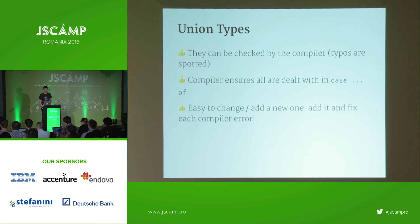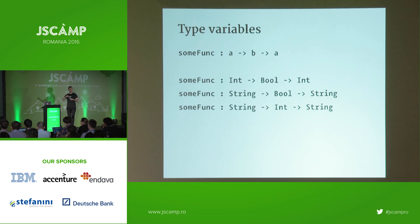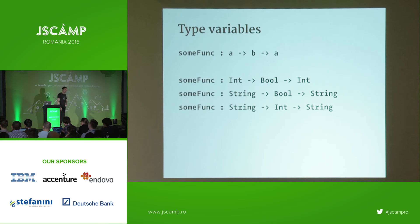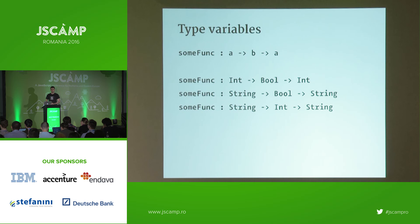Elm also has type variables — I'd call them placeholders. When you don't know exactly what the type is going to be, but know the function needs to return the same type. For example, 'someFunc' takes a type A and a type B and returns a type A — meaning the As must match while B can be any type. Store that in the back of your head for later.